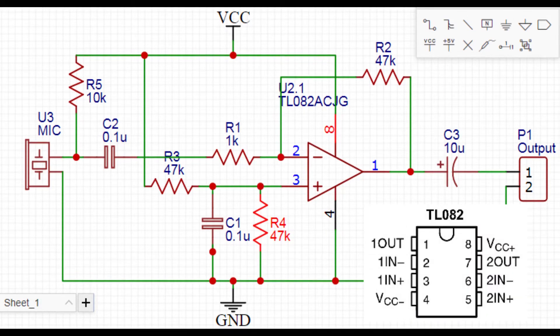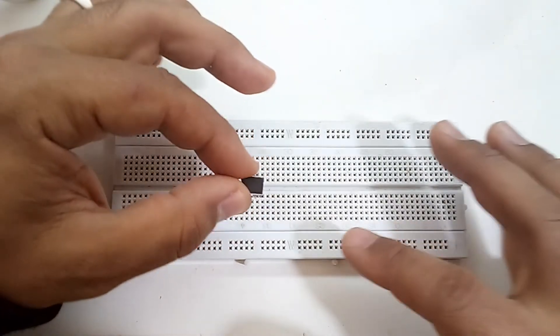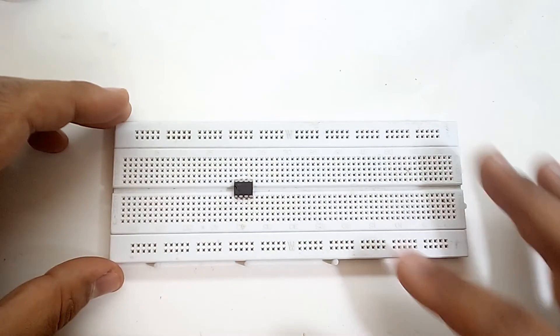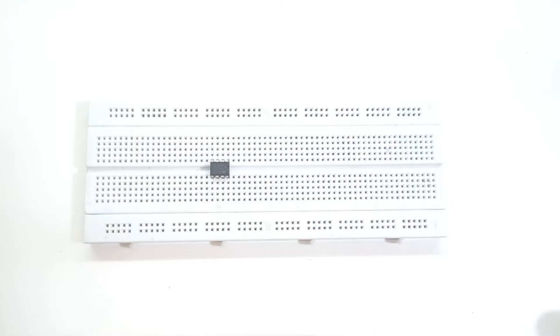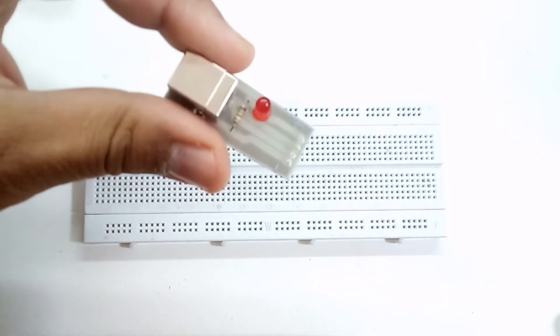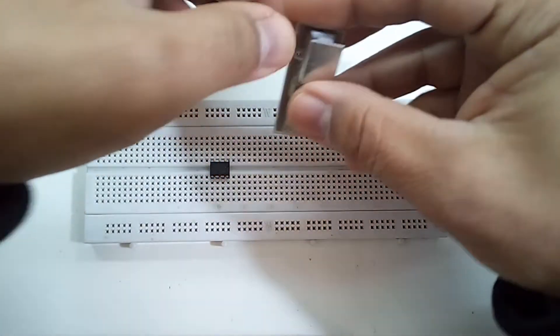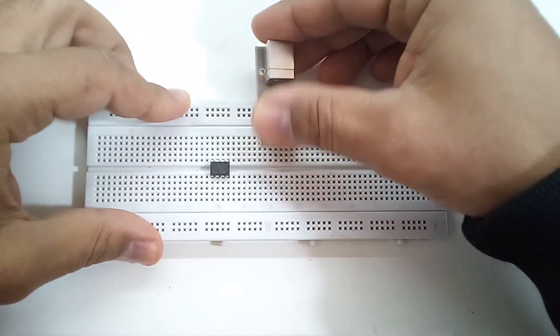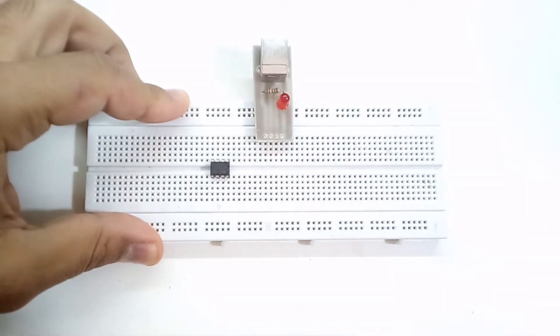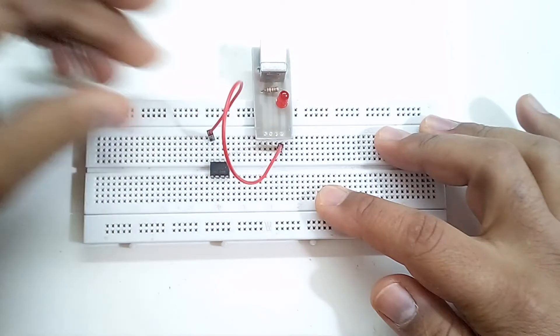Now let's begin inserting our components in the breadboard. We begin by the op amp, make sure its pin number one is on the left side. We add this USB adapter that I have built in order to use the USB port of my computer as a power source, but you can use any 5 volt power supply instead.